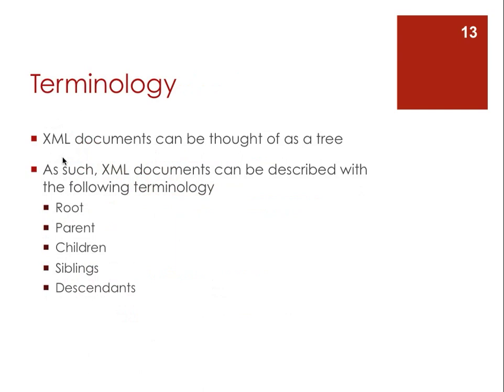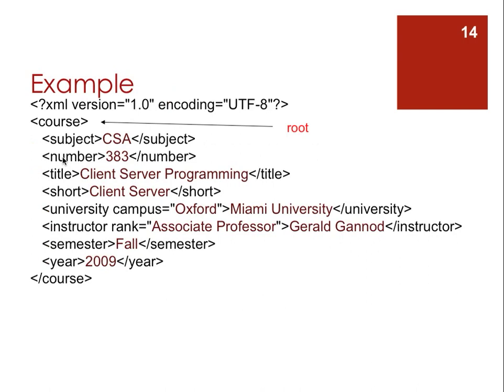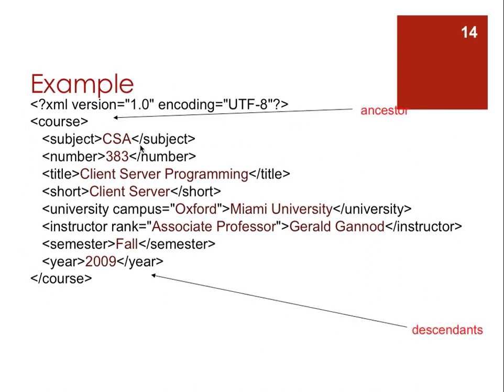XML documents can be thought of as a tree, and you can use tree terminology to talk about different parts of an XML document. There is a root, and elements within an XML document can have parents, children, siblings, descendants, and so forth. Looking at our original document: 'subject,' 'number,' and 'title' would be siblings because they're all within the same level under 'course.' An ancestor of 'subject' would be 'course,' and a descendant of 'course' would be 'year.' You can use the same tree data structure terminology throughout.